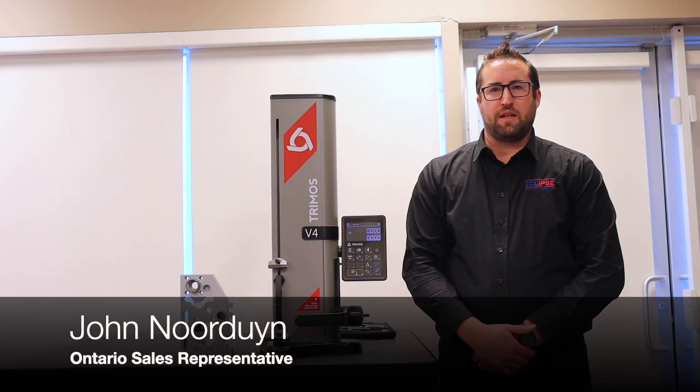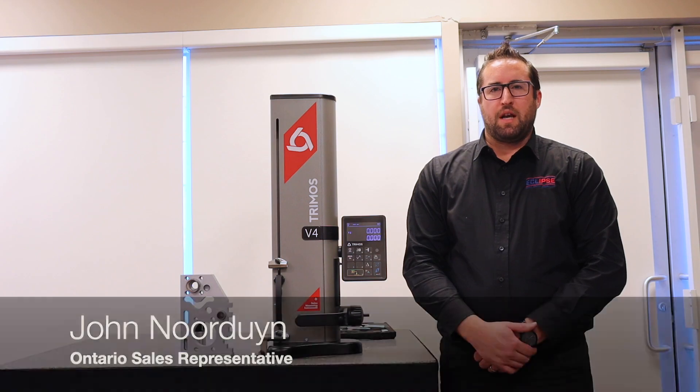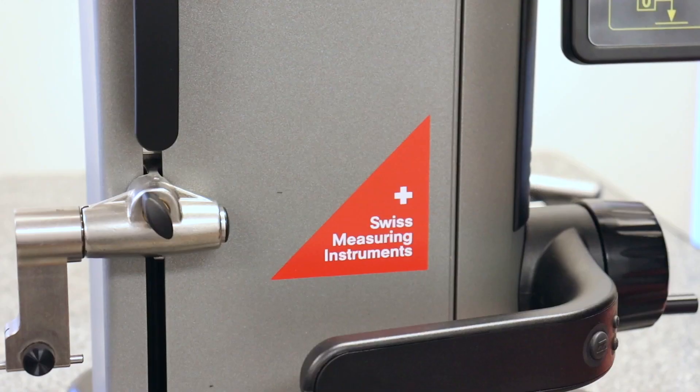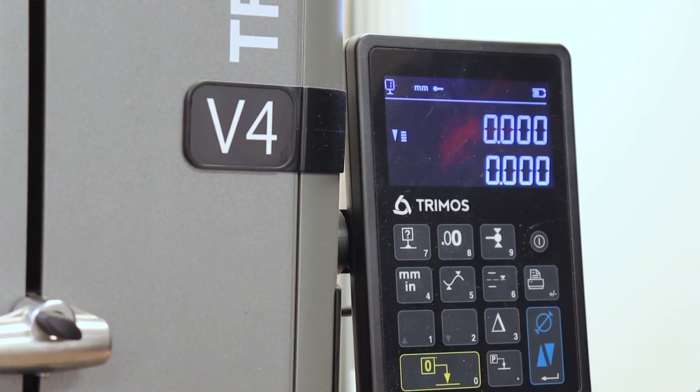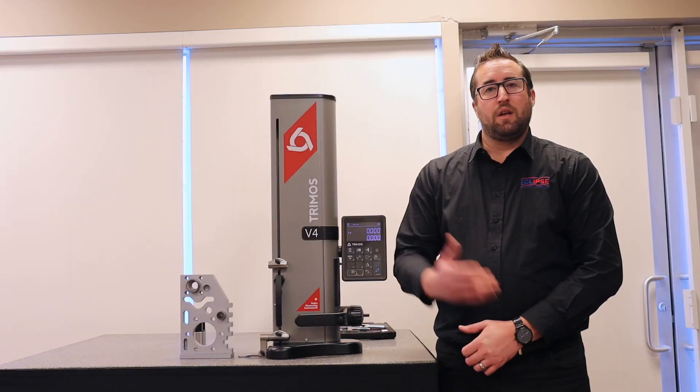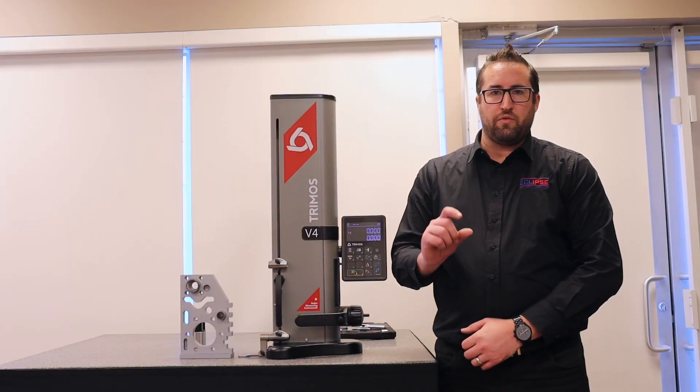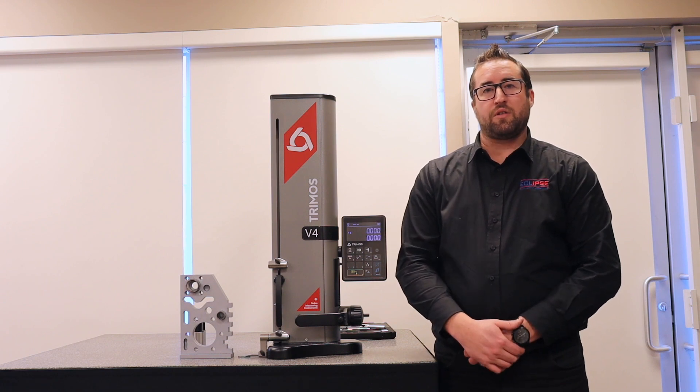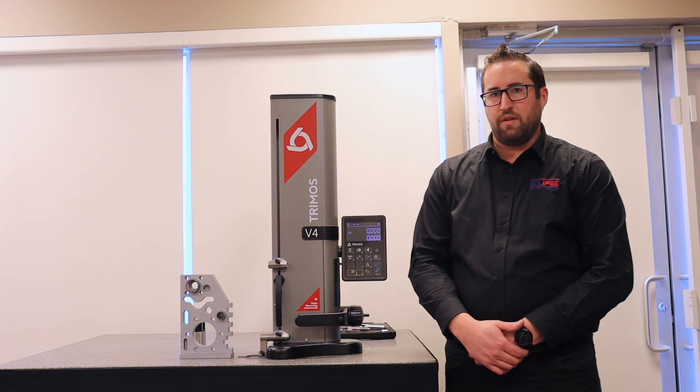Hi everyone, it's John Nordine here from Eclipse Tools North America, and we're showing you the Tremoss V4 eye gauge. Some of the measurements we're going to be going over are height measurement, diameter measurement, roof diameter measurement, roof width measurement, and also the flatness on a surface.